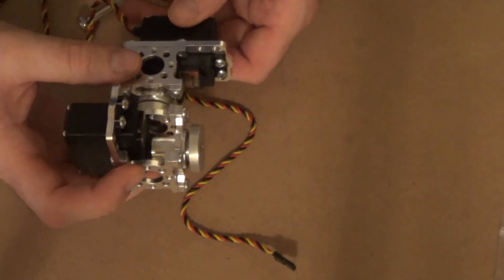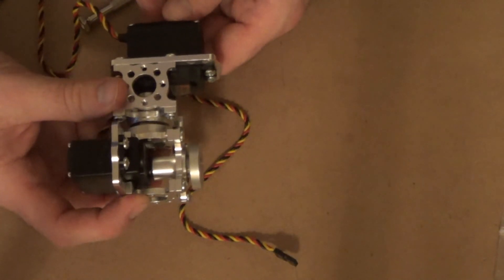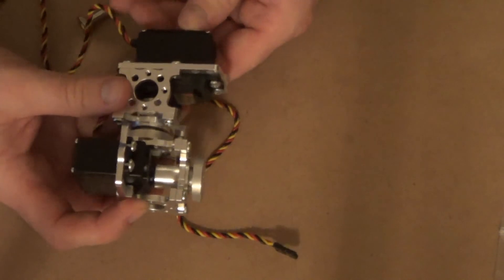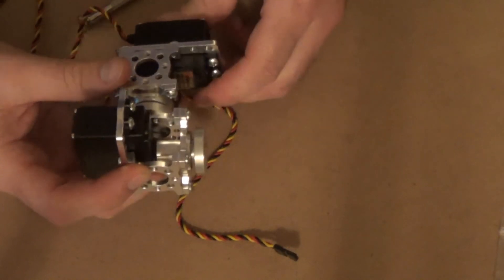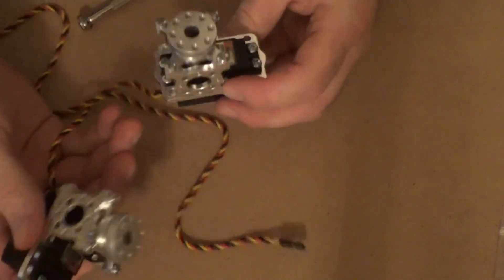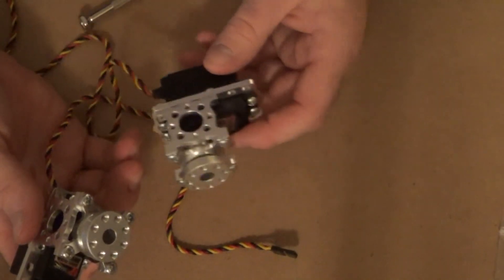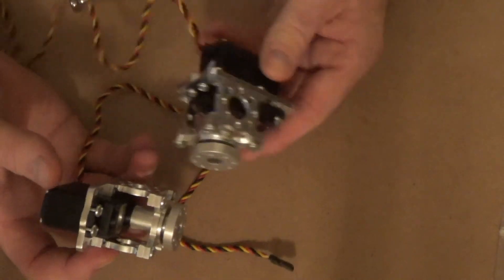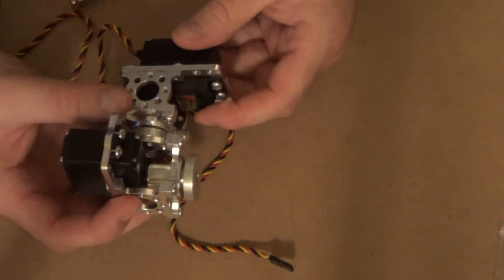And I only need to do two axes, because I'm doing a gyro-stabilized two-axis camera gimbal. So that should work out fine. Now I haven't been able to connect these because I didn't think they'd get any extra screws. But once I do that, I should be able to play with this a bit.